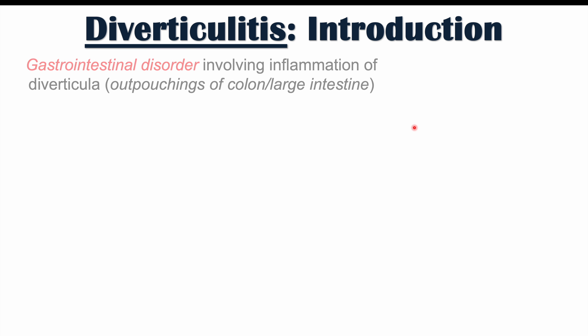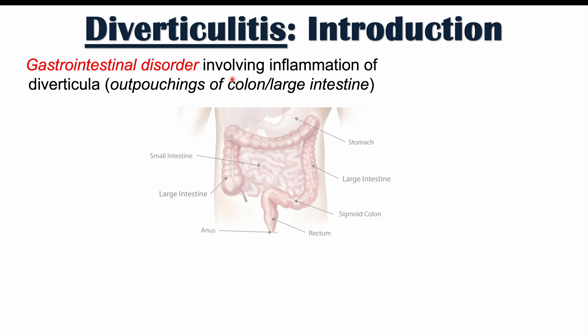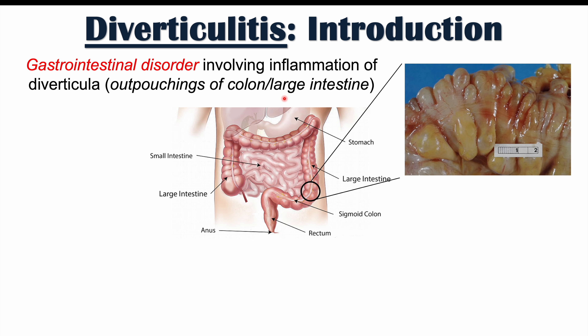Before we talk about those diets, let's first talk about what diverticulitis is. Diverticulitis is a gastrointestinal disorder involving an inflammation of diverticula, which are outpouchings of the colon or large intestine. Looking at this image, here's the stomach leading into the small intestine, which then leads into the large intestine — and this is where these diverticular outpouchings occur.